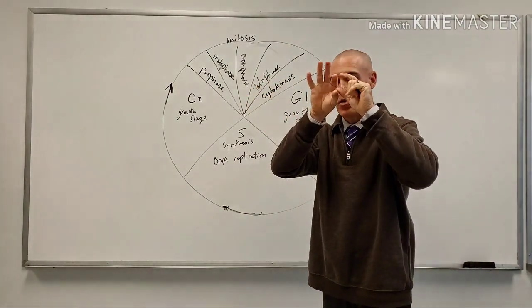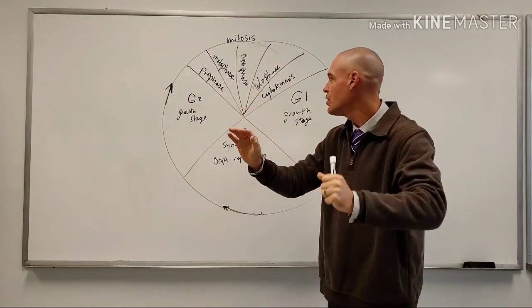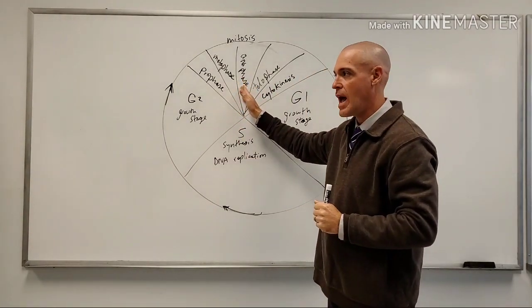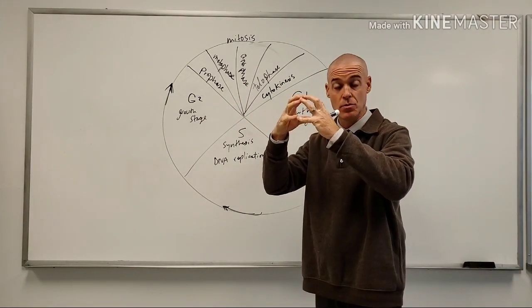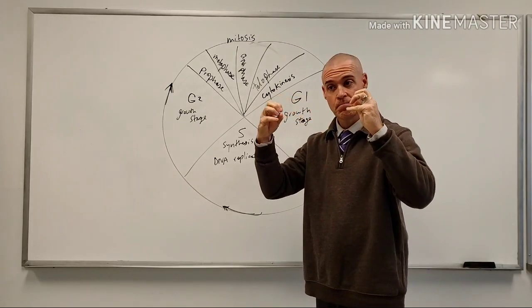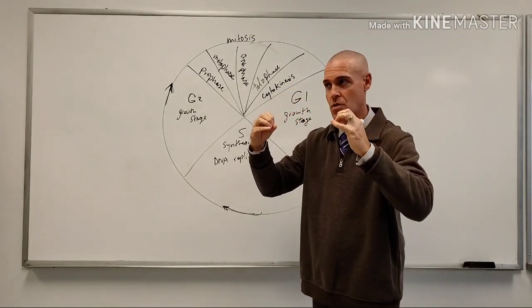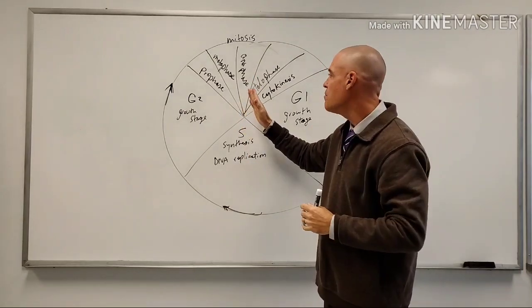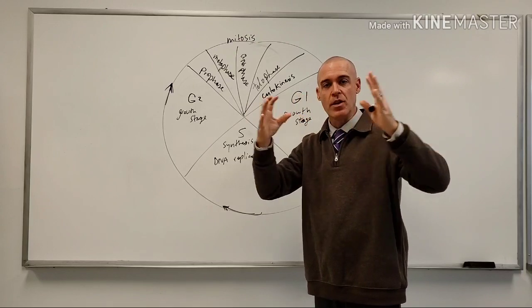In anaphase, what happens is the chromosomes are paired—the chromosomes then basically split. So we get splitting of the paired chromosomes—big event there—and basically they start to move toward the ends of the cell, the poles of the cell.